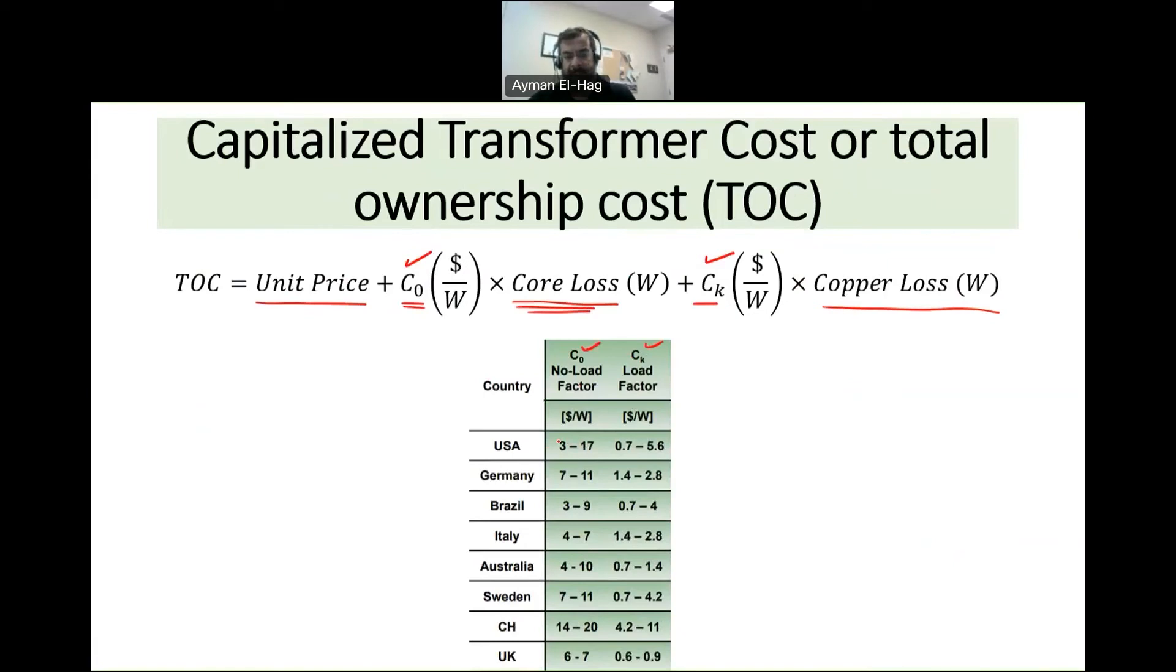And these are some typical values for C₀ and Cₖ for different countries. You can see here for example in the USA from 3 to 17, but the Cₖ from 0.7 to 5.6. Germany from 7 to 11 the C₀, but the Cₖ is from 1.4 to 2.8, and so on.